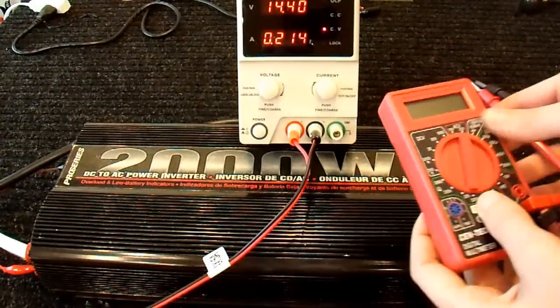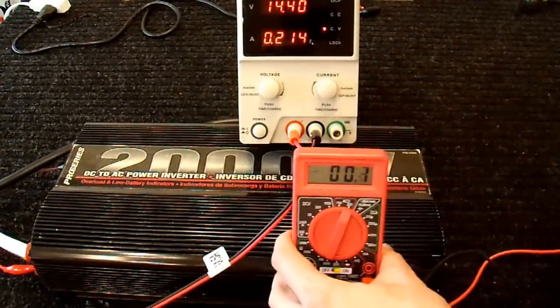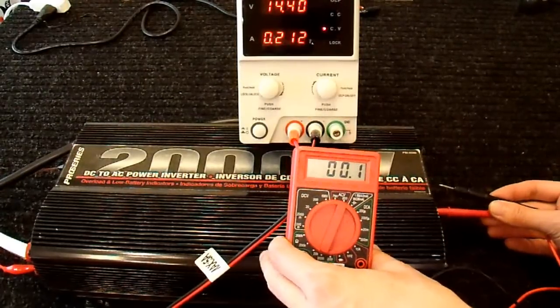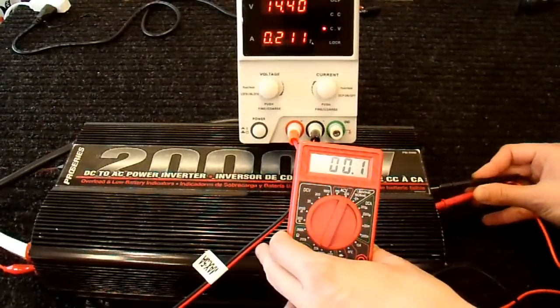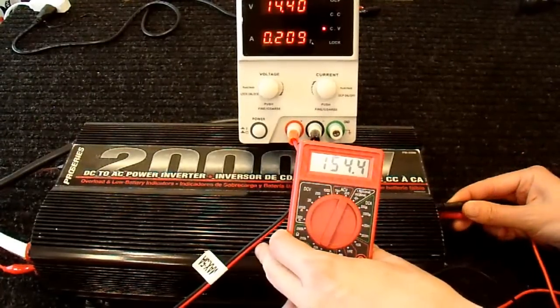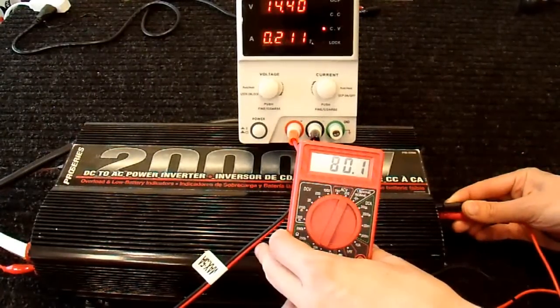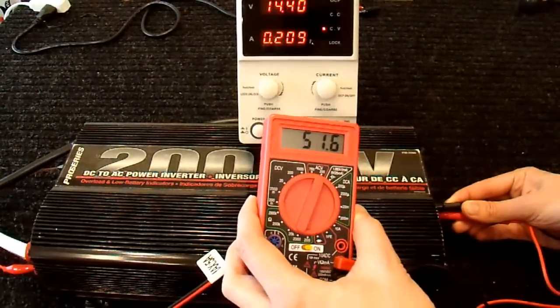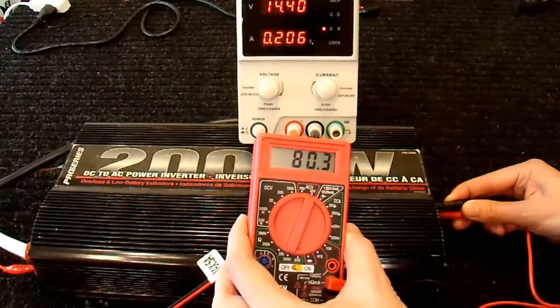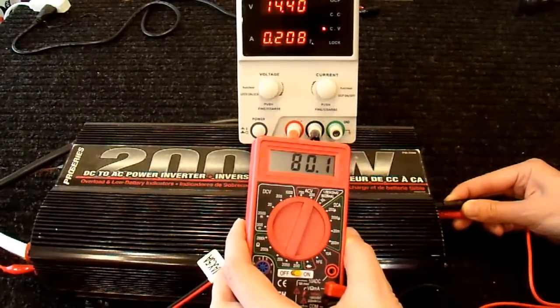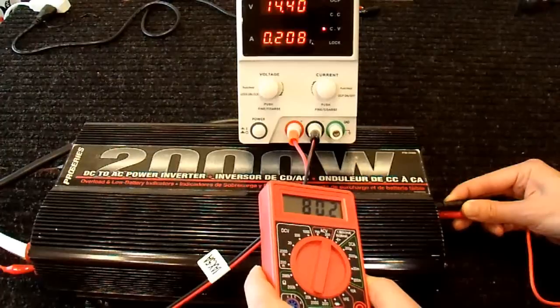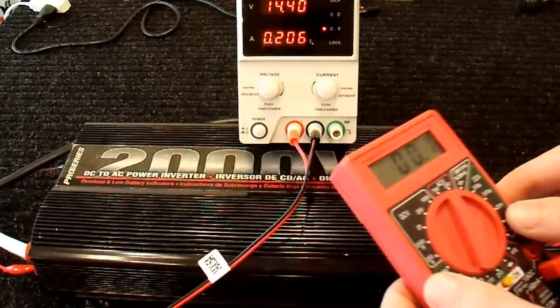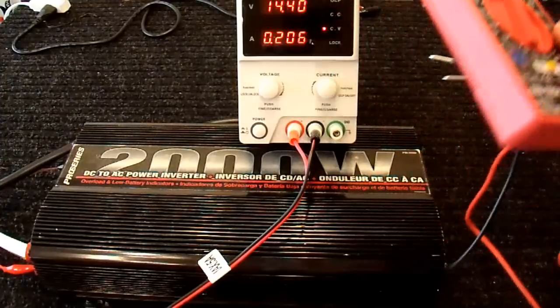I'll turn this thing on, set it to AC volts. Turn it on so you can see it. And put these leads into the receptacle. One in here, one in here. And we've got 80 volts. 80.2 volts. Huh. Wow. This is a really cheap meter. Let me grab a different meter quick.